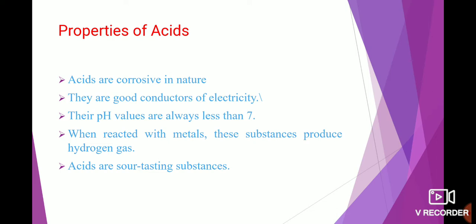Now let's see the properties of acids. Acids are corrosive in nature — they carry out the corrosion of substances. They are also good conductors of electricity, meaning electricity can flow through them.